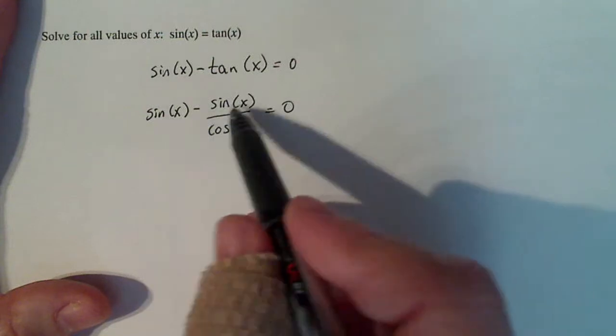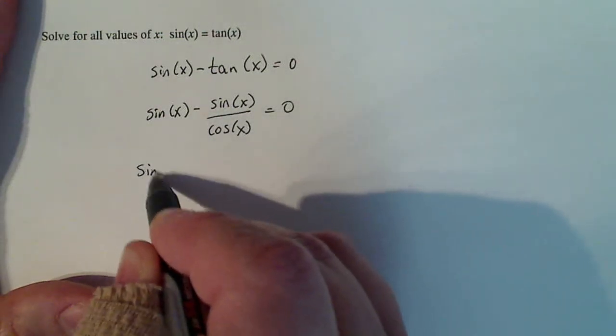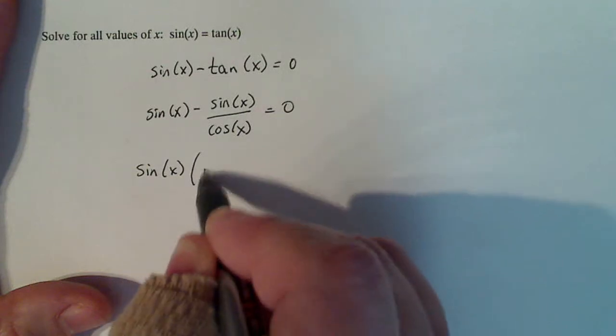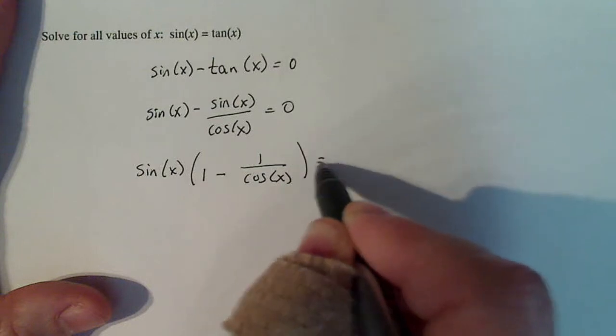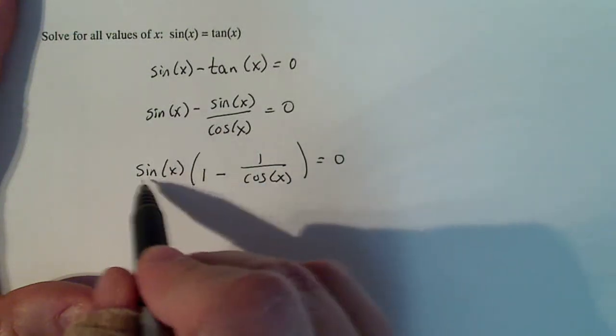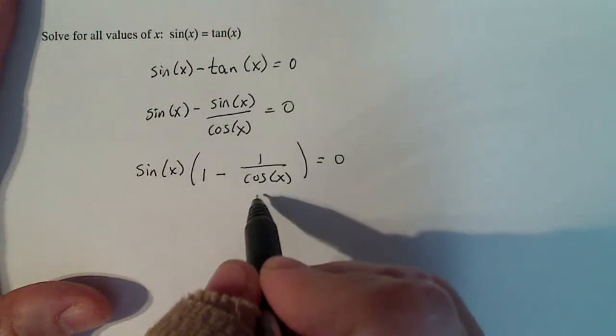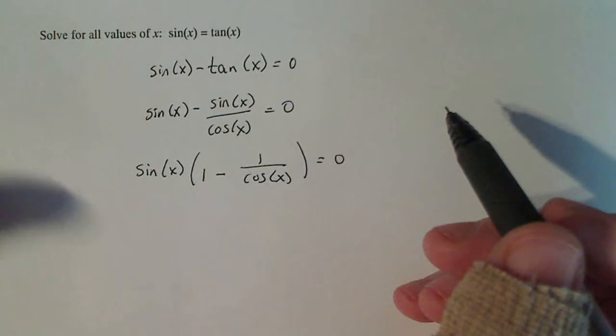But now notice that sine is a factor of both of those. So I can factor out sine of x. And I'm left with one minus one over cosine of x. If you don't believe that, just multiply it back. Sine times one is sine x. Sine x times minus one over cosine x is sine x over cosine x.